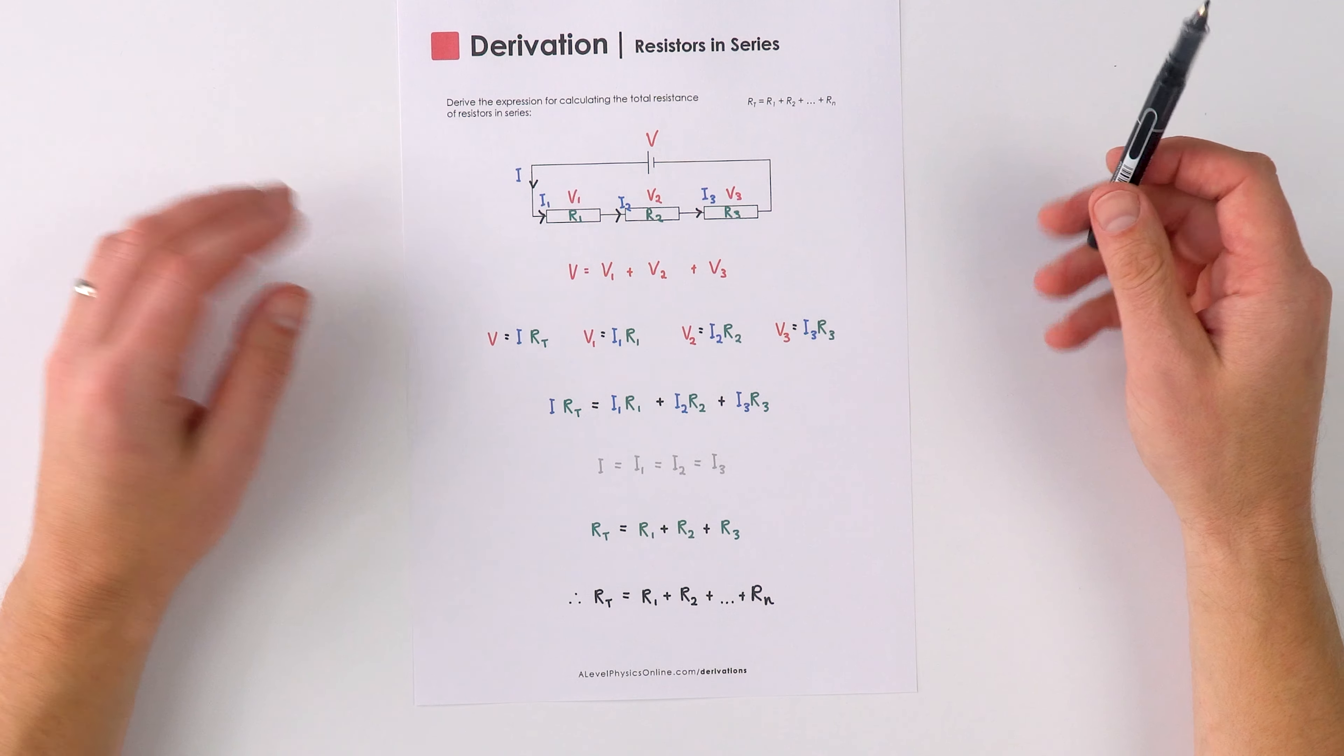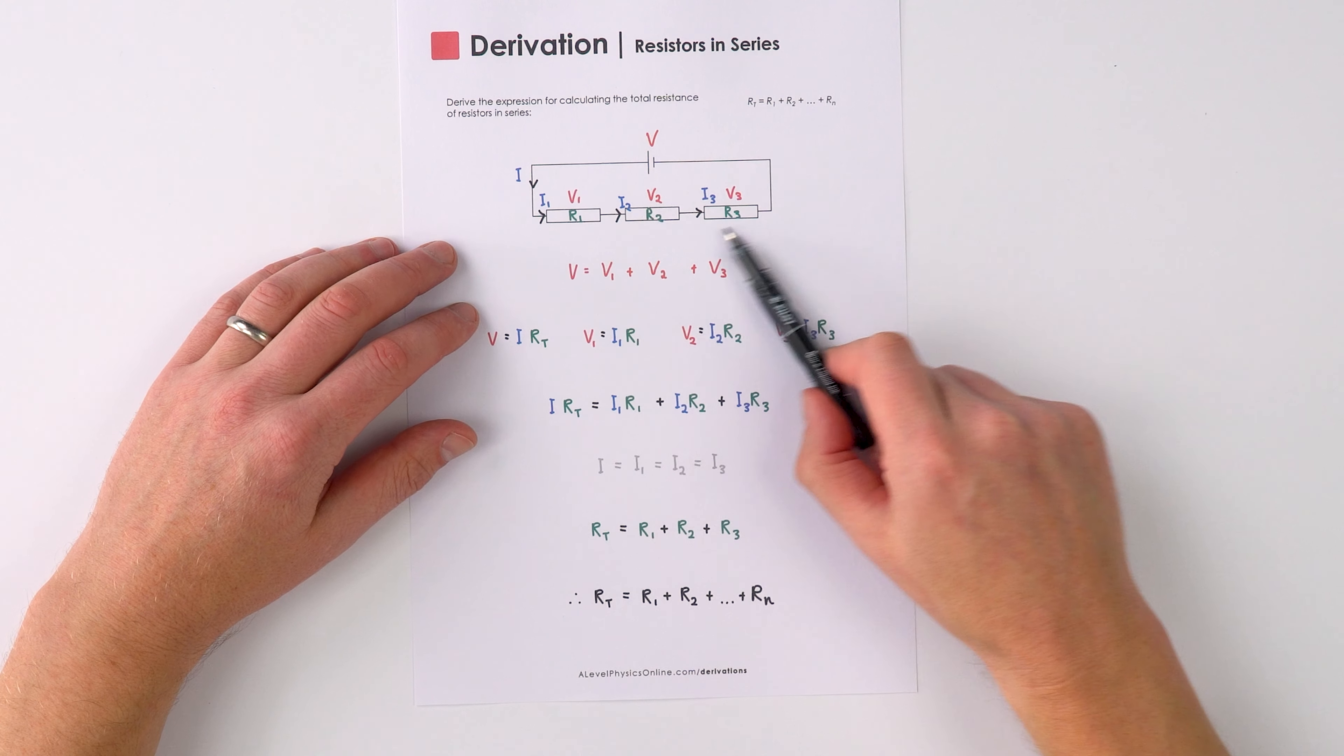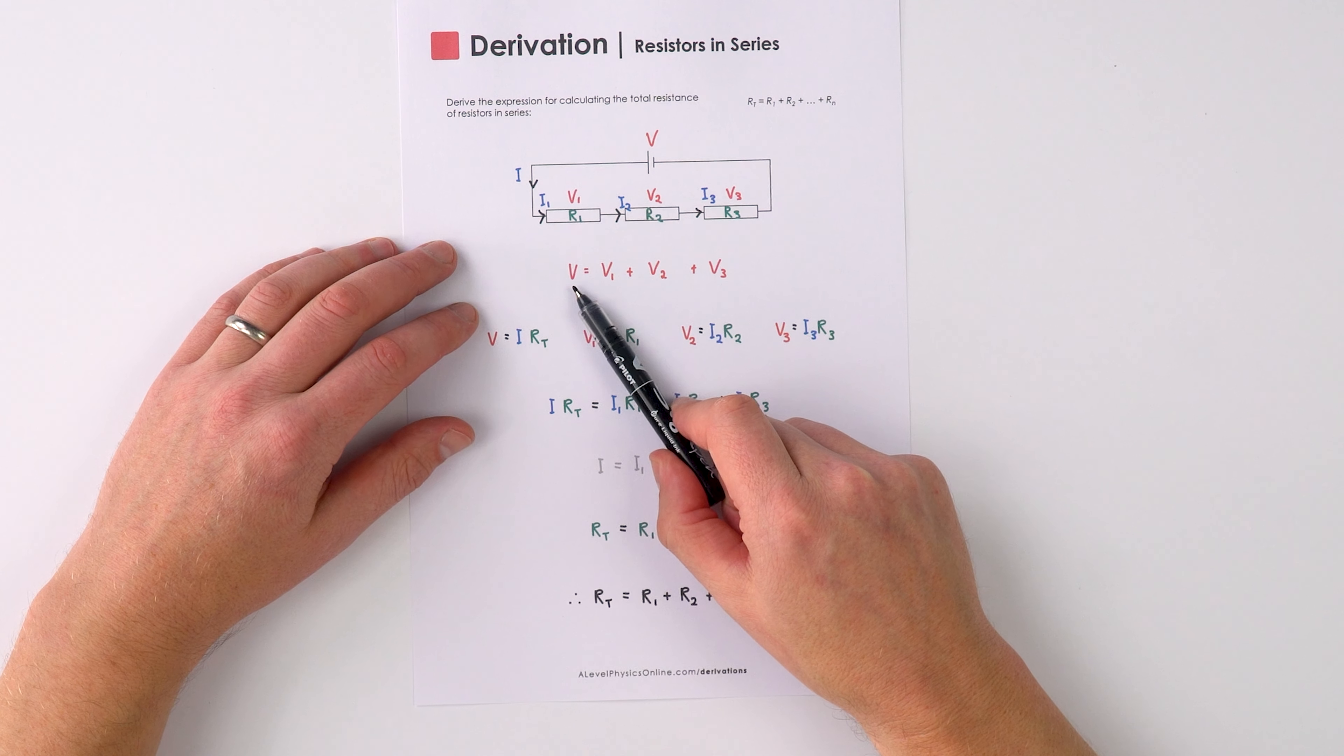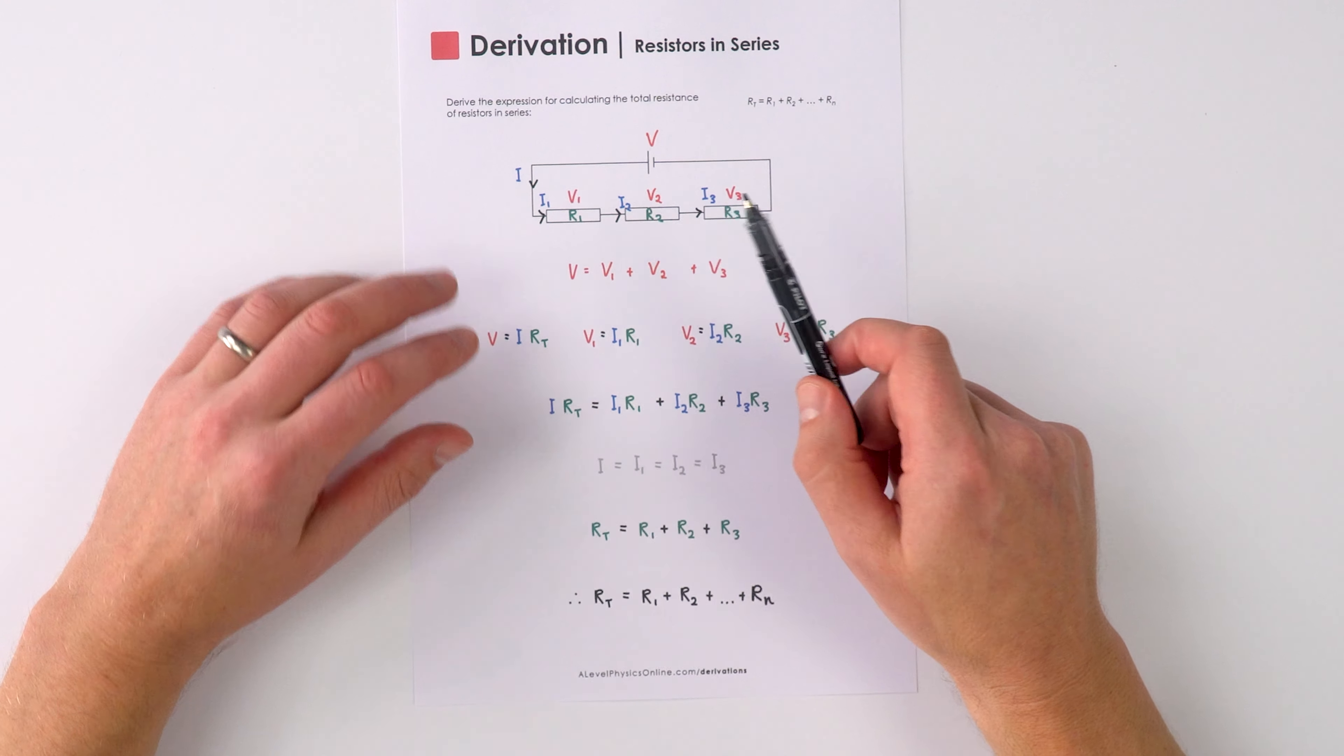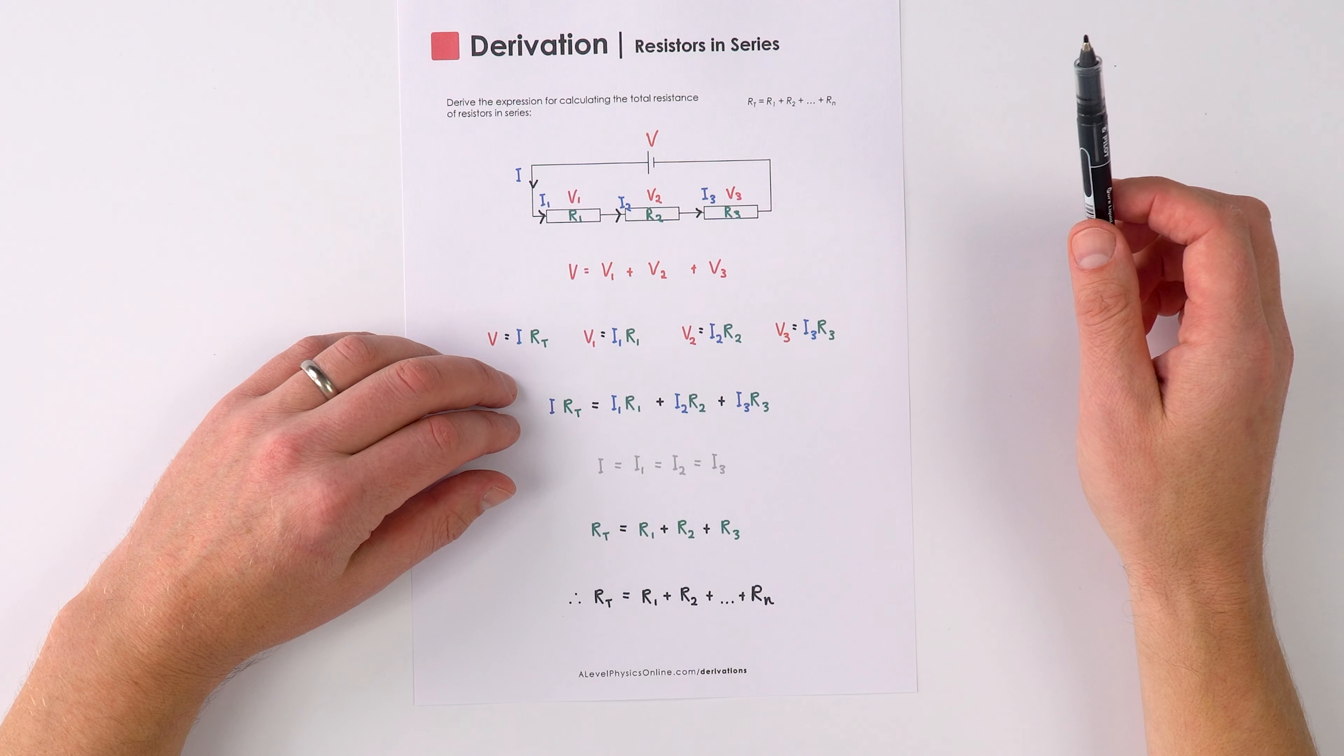Now due to Kirchhoff's second law about conservation of energy in that circuit, we can say that V is equal to V1 plus V2 plus V3. And this is assuming there's no internal resistance from this power supply.